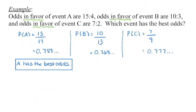This strategy is one that many students find very effective when asked to determine which event has the best odds. You have to watch each one as odds in favor: favorable outcomes go in the numerator, and adding favorable plus unfavorable gives the total number of outcomes. Then turning it into a decimal or percentage lets you see which is the greatest. That is the event with the best odds. In this case, A has the highest value and therefore the best odds of occurring.